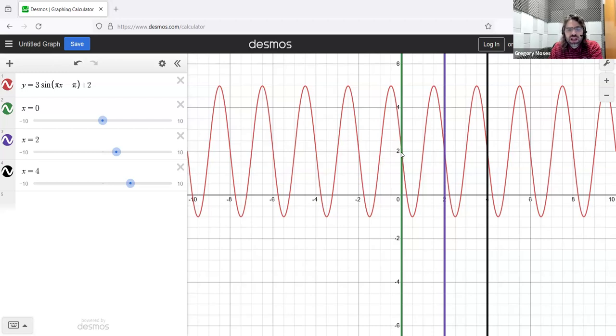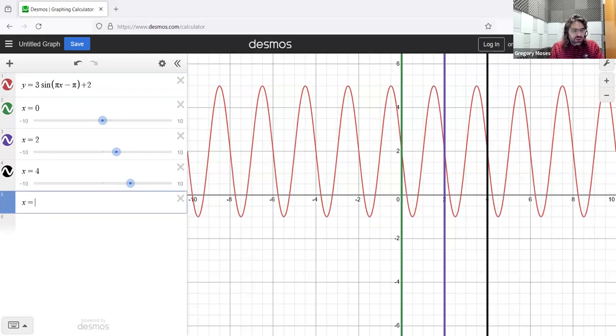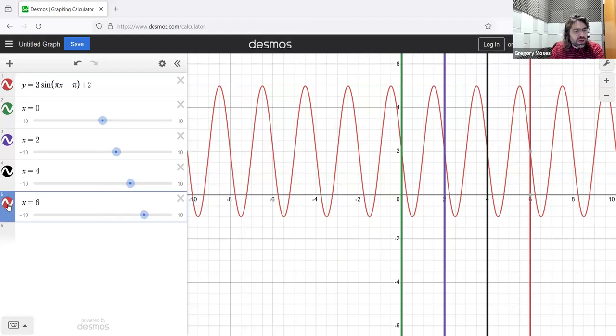In both cases, the graph starts at two. It drops down to negative one. And then it drops back down to its starting point of two. And then it does the exact same thing again. Down to negative one, up to five, back down to its starting place. And this pattern is just going to repeat over and over.